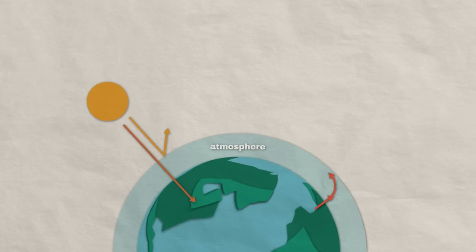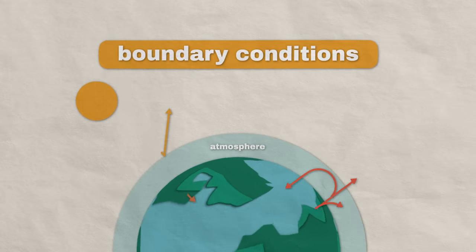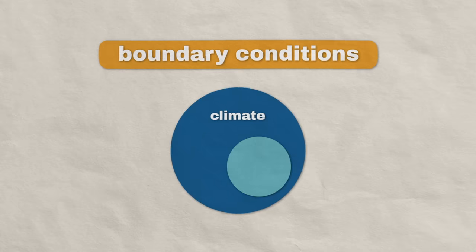These parameters are known as boundary conditions. And as their name suggests, they act as constraints on climate and weather.